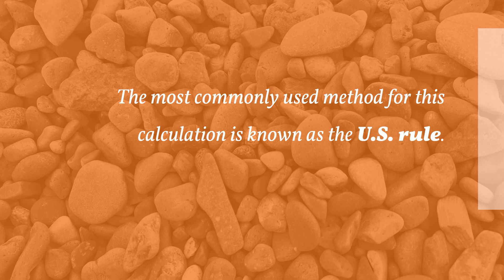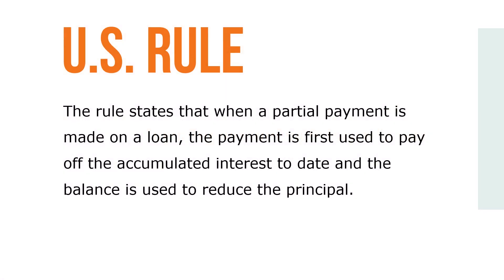The most commonly used method for this calculation is known as the U.S. Rule. The rule states that when a partial payment is made on a loan, the payment is first used to pay off the accumulated interest to date, and the balance is used to reduce the principal. In this application, the ordinary interest method — 360 days — will be used for all calculations.